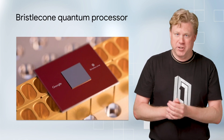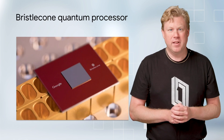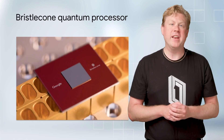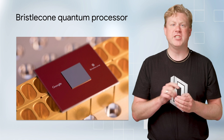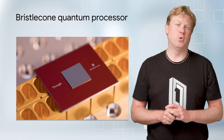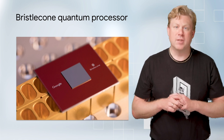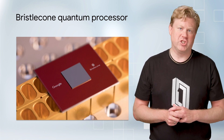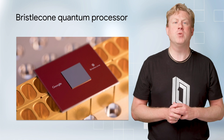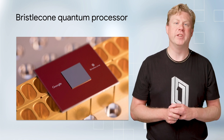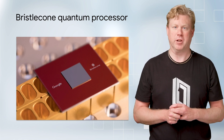Here is Google's own Bristlecone chip. This is a quantum computer made of superconducting circuits with 72 quantum bits. Google's researchers are using this chip to attempt to achieve a task that cannot be solved in years on a supercomputer.